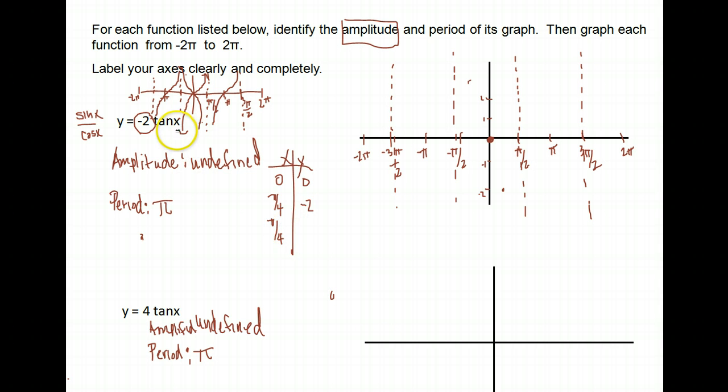The tangent of negative π/4 is negative 1, but if you multiply that by negative 2, we get positive 2. So at negative π/4, which will be right here, I'm up at positive 2. Like I said, our curve is going to look like this.